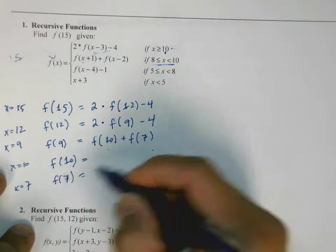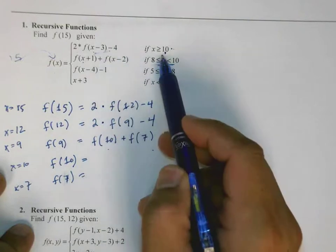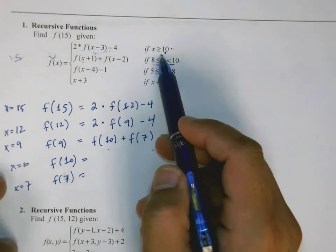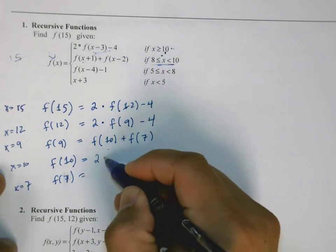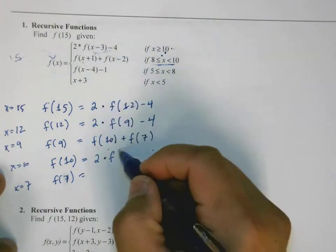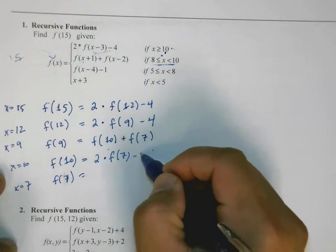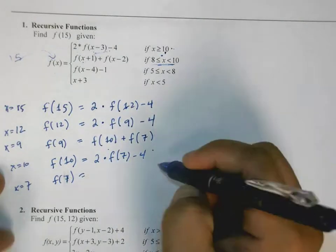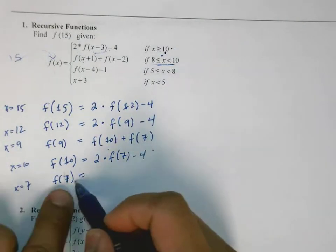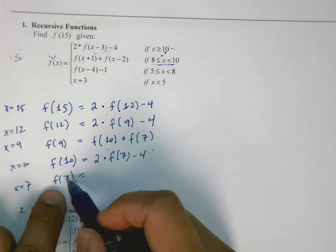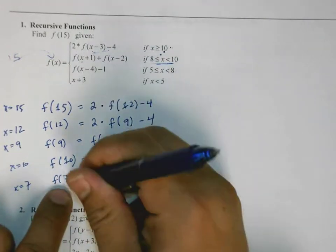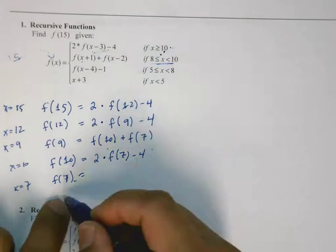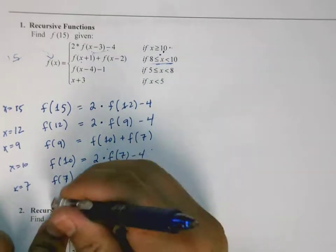Well, if I call f of 10, I hit this block of code or condition right here. So this is going to try to compute f, or 2 times x minus 3, which is f of 7, minus 4. And so what a coincidence, I have to calculate f of 7 anyways.